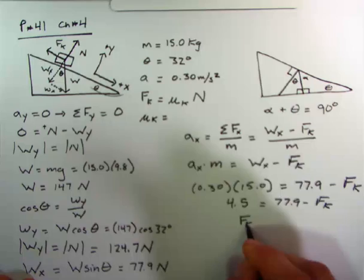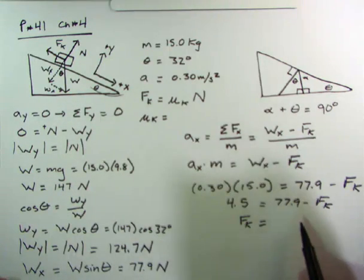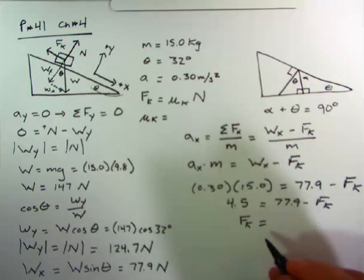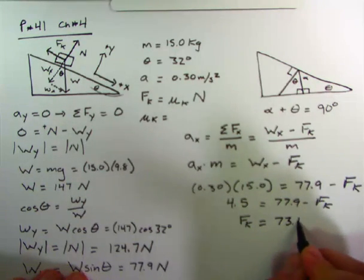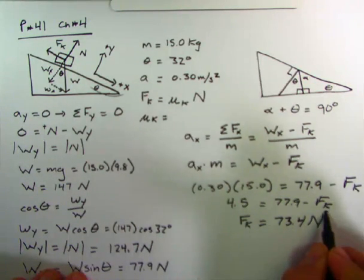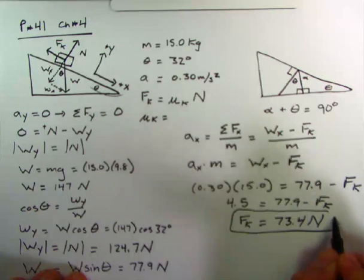If we beat this into submission here with our algebra, we would get 4.5 equals 77.9 minus f sub k. Therefore f sub k, the force of kinetic friction, has to be equal to 73.4 newtons. And that's one of the things we were after.